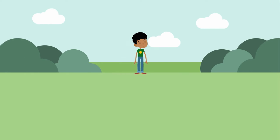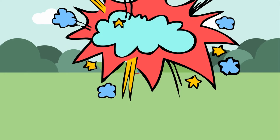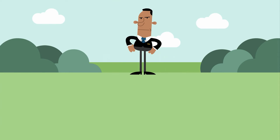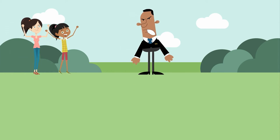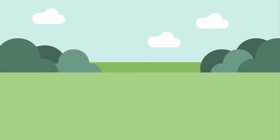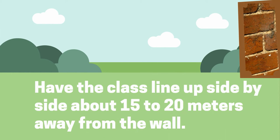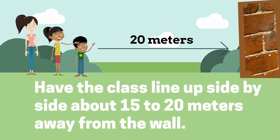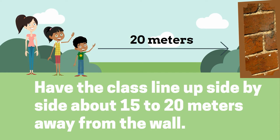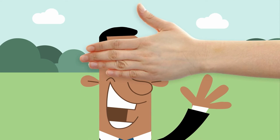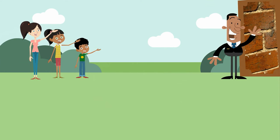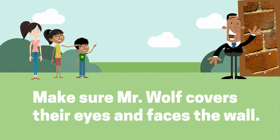Start by choosing a student to be the wolf. For the first game it's usually more fun if the teacher is the wolf. Have your class line up side-by-side about 15 to 20 meters away from the wall. Make sure Mr. Wolf covers her eyes and is facing the wall.